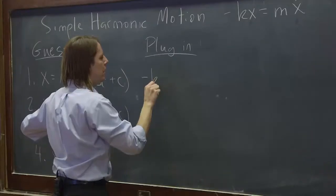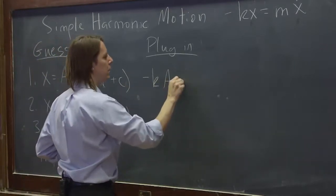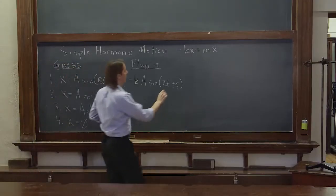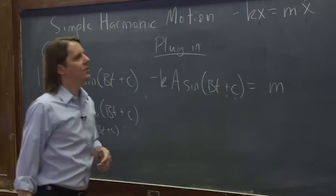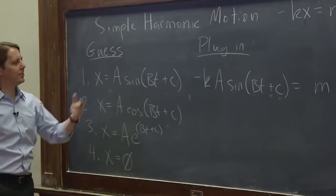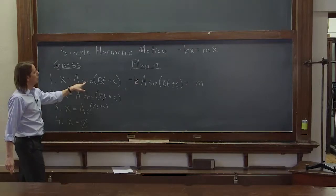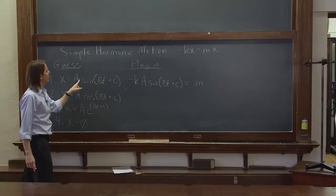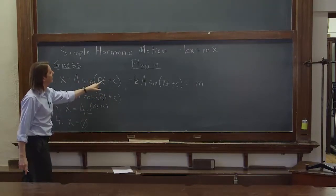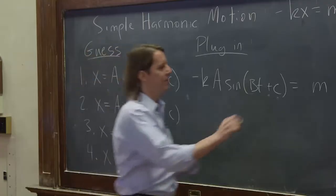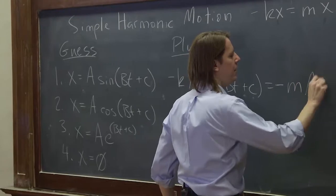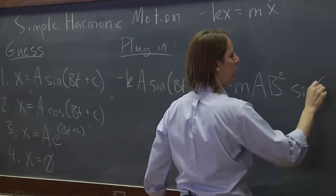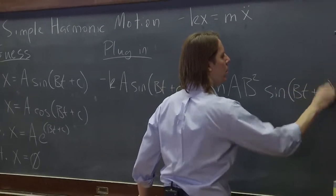Minus k times x, a sine bt plus c. It has to be equal to the mass times the second derivative of this function with respect to time. So the derivative of sine would be you pull out a b, because you have to take the derivative of this thing with respect to time and multiply by it. So one b comes out, and sine goes to cosine. And then on the next derivative, cosine goes to negative sine, and another b comes out. So you end up with that negative sine. The a is along for the ride. You get two b's, so b squared, and then back to sine, bt plus c.